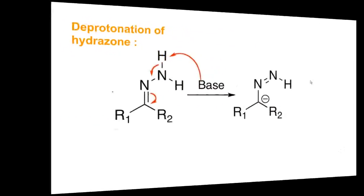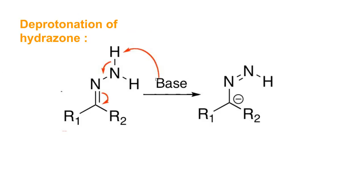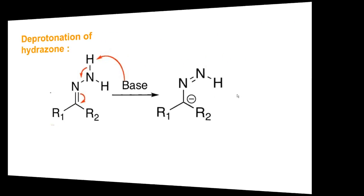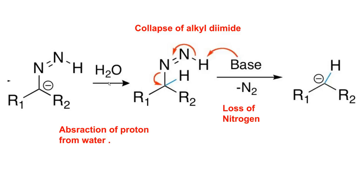Now let's look at the deprotonation of the hydrazone. Hydroxide groups in solution attack the hydrogens on the hydrazine portion, and the nitrogen gains a negative charge, which resonates back and forth. When the electrons reside on carbon, they deprotonate water — since potassium hydroxide is dissolved in water — forming the first hydrogen of the alkane. A proton is extracted from water and attaches to the carbon. Then another hydroxide group reaches for the hydrogen on nitrogen.